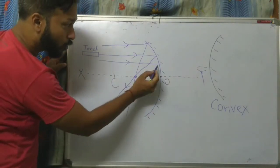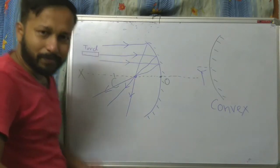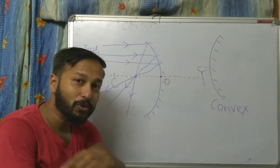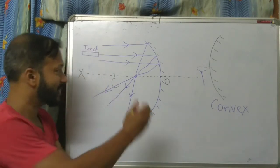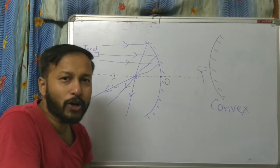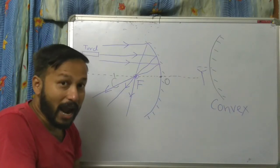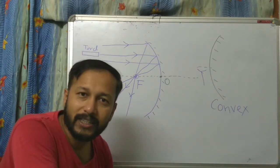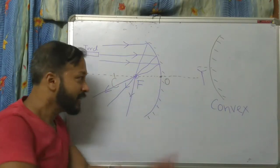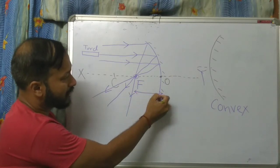So when any ray is parallel to the principal axis and after reflecting by the concave mirror, all reflected rays pass through the same point on the principal axis. This particular point is called the focus point, labeled F.